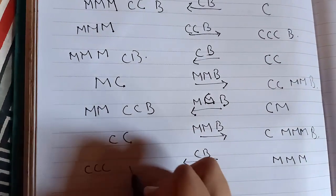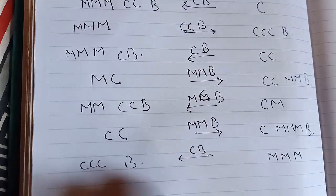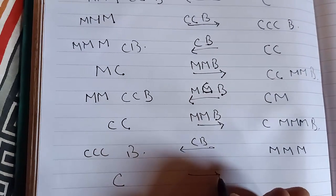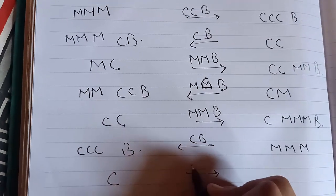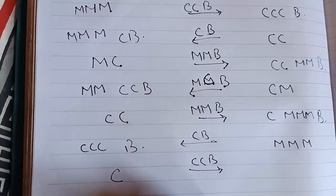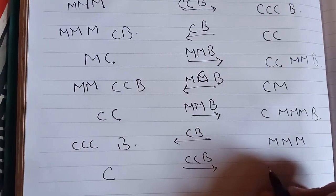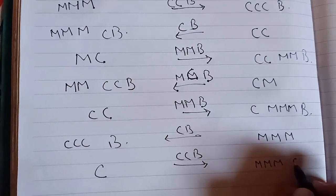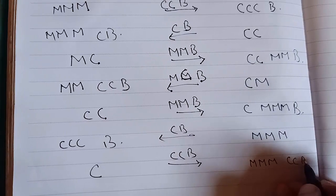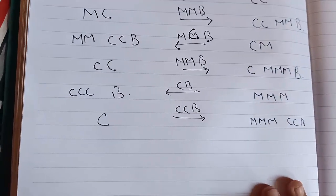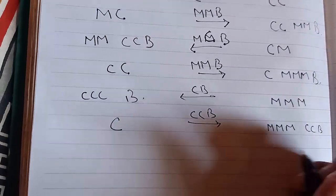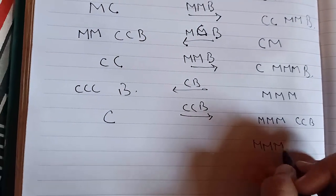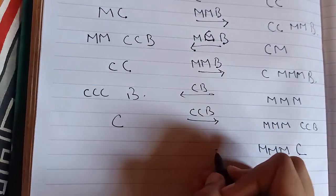Three cannibals and one boat, then two cannibals and one boat, then three missionaries, two cannibals, and one boat. Right after that, here we have three missionaries and one cannibal.